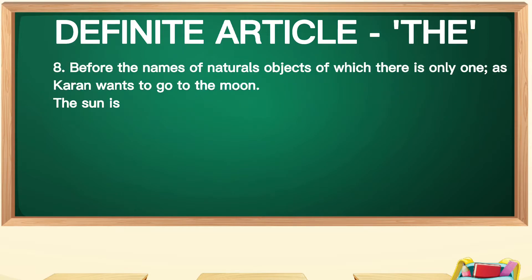The eighth point: the is used before the names of natural objects of which there is only one — like only one sun, moon, and stars. They are natural things. For example: 'Karan wants to go to the moon.' 'The sun is a star.' 'The earth moves round the sun.'